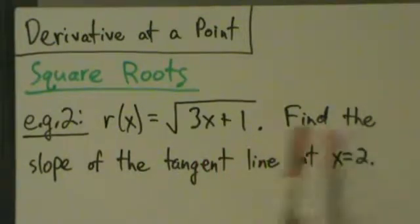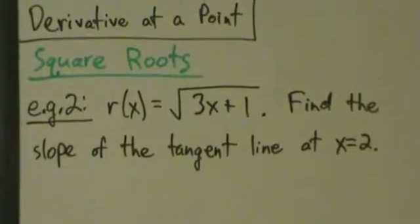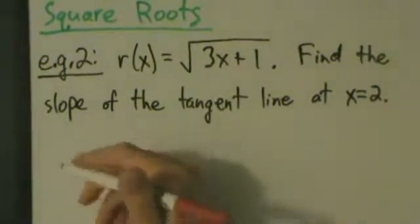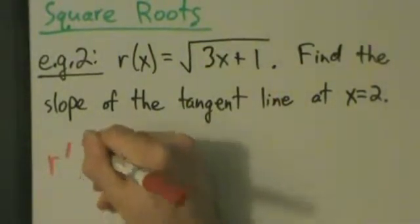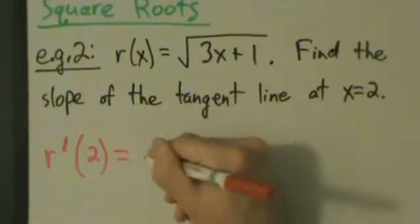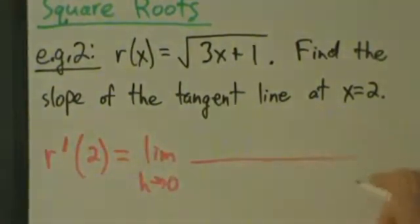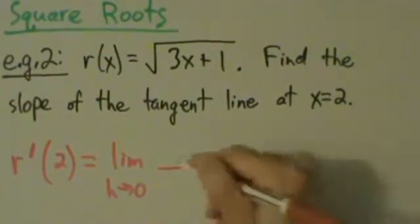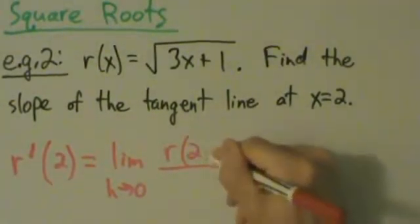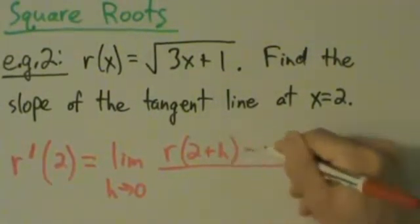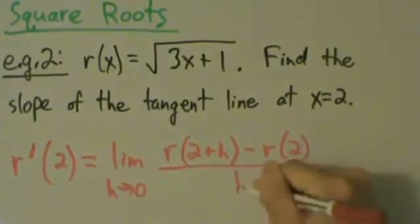So let's go ahead and do that. Slope of the tangent line, what's that mean? That's just the derivative, right? So find the slope of the tangent line means find the derivative. So we're going to go to our definition here, and it's going to be r'(2) equals the limit as h goes to 0 of r(2+h) minus r(2), all divided by h.